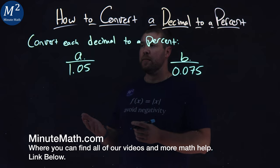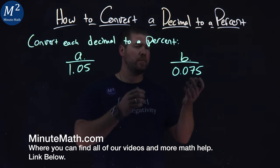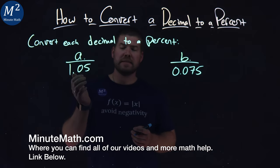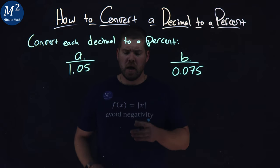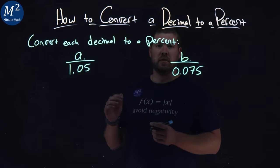We're given this problem right here. Convert each decimal to a percent. We have 1.05 and 0.075. Let's start with part A, 1.05.